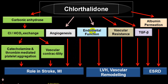Chlorthalidone also improves endothelial function, contributing to reduction in stroke and MI. It plays a role in reversal of LVH (left ventricular hypertrophy) and vascular remodeling, and produces peripheral vasodilatation decreasing vascular resistance. At the kidney level, it decreases albumin excretion, improving kidney function, and is beneficial in end-stage renal disease. TGF-beta also helps in improving end-stage renal disease and vascular remodeling.